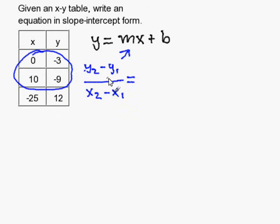And y2 minus y1 would be negative 3 minus negative 9. And x2 minus x1 is going to be 0 minus 10.